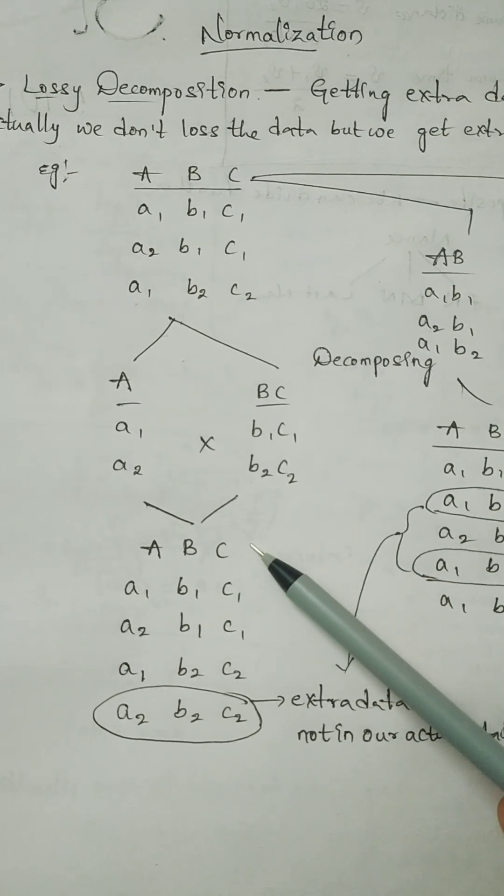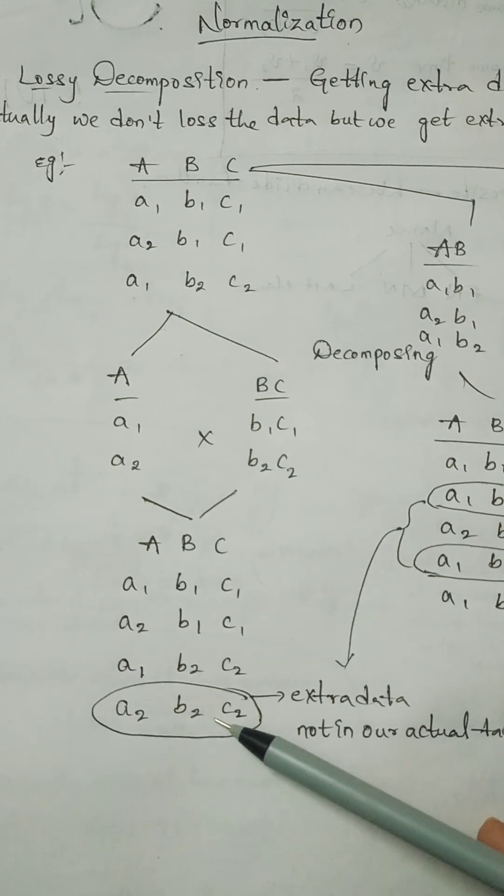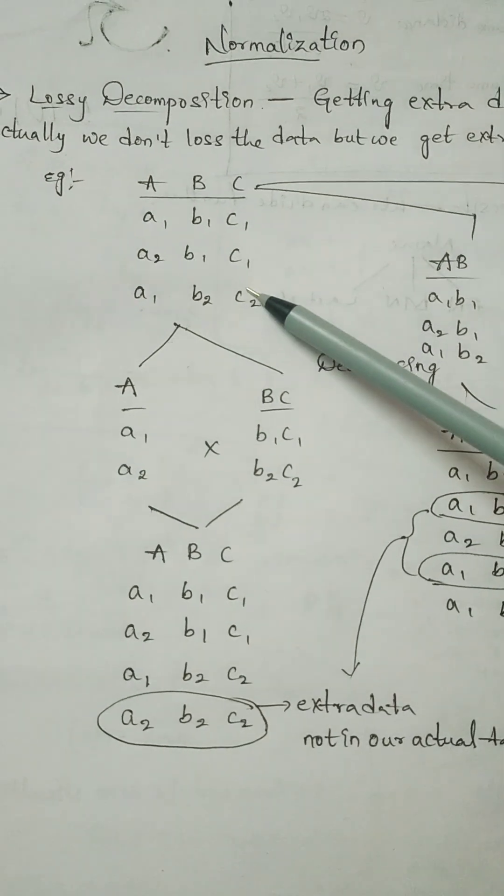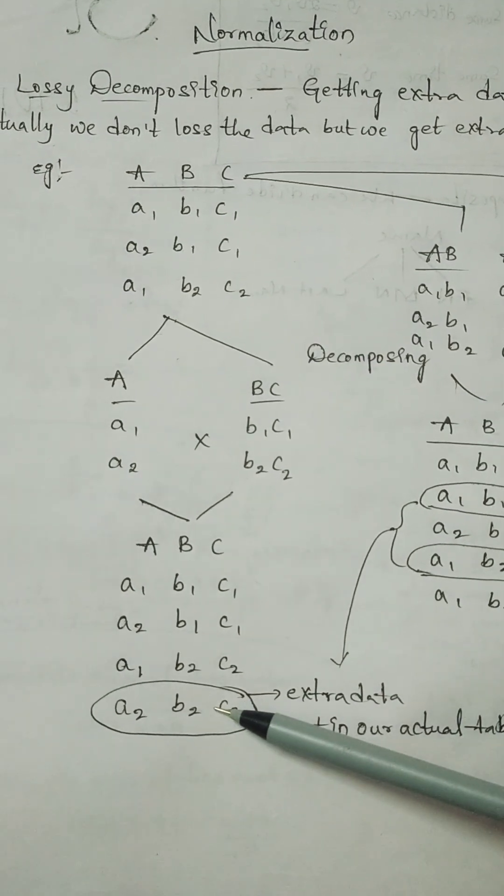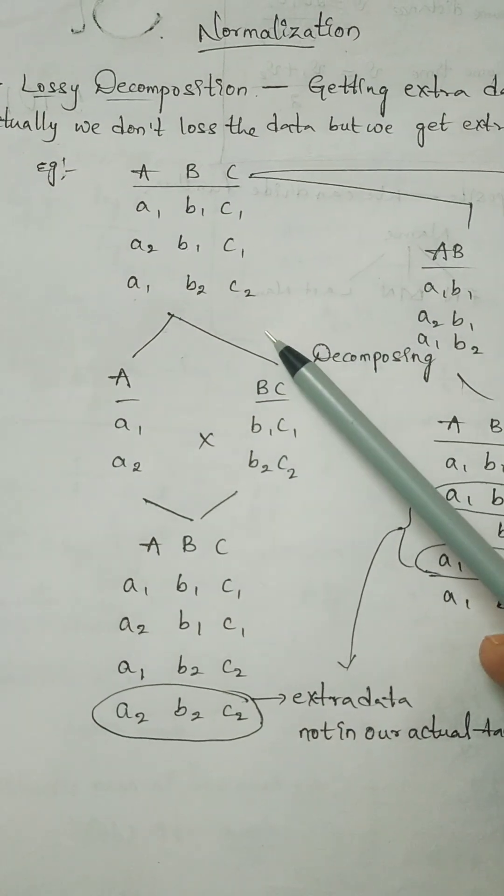Whenever I combine these two attributes, I got some other tuples as A2, B2, C2. It is not actually present in our actual database. Here we are getting some extra data. And this kind of example is known as lossy decomposition.